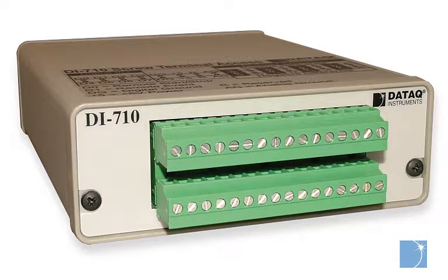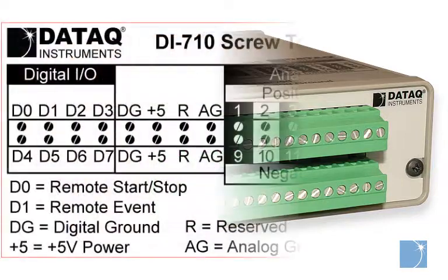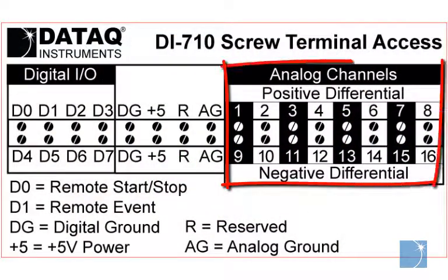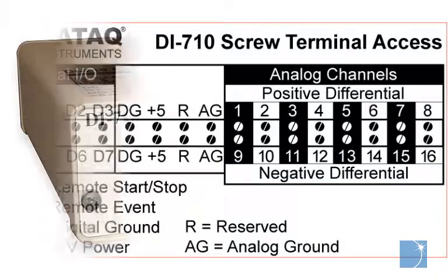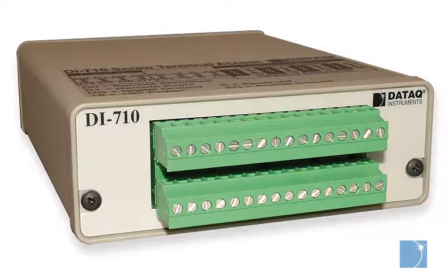The DI710 is a portable USB or Ethernet connected data acquisition system featuring 16 analog channels that can be configured for single-ended or differential operation. DI710 series instruments have a full-scale measurement range from ±10 mV to ±10 V across four programmable measurement ranges with 14-bit resolution.